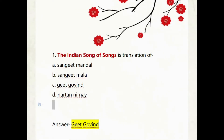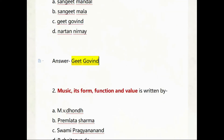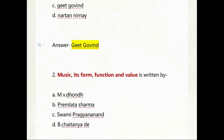Our first question is: 'The Indian Song of Songs' is the translation of which book? The options are Sangeet Mandal, Sangeet Mala, Geet Govind, and Nata Nirnay. As you can see, the answer written here is Geet Govind.